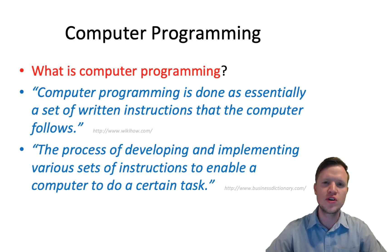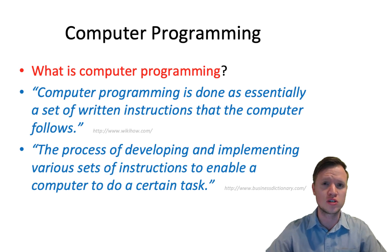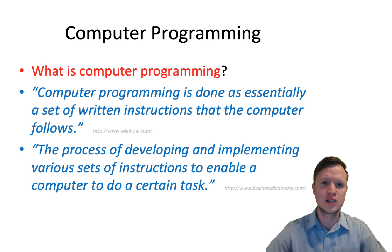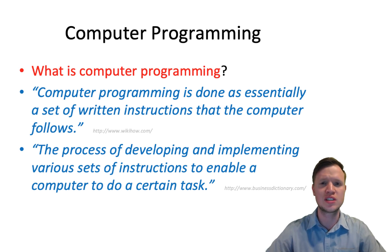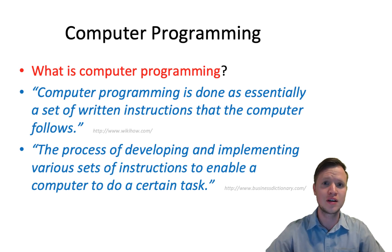It's very important to understand that as it may seem that a computer is very intelligent, it's actually not. Human beings are intelligent — computers are not. A computer does exactly what we tell it to do, nothing more, nothing less. We need to remember that for later when we debug and need to understand why the program is not doing what it's supposed to do — it's not the computer's fault, it's our fault. Computer programming is a set of instructions created by the programmer, and the computer will follow those instructions line by line.